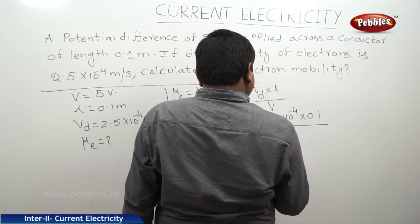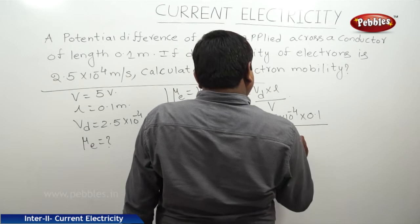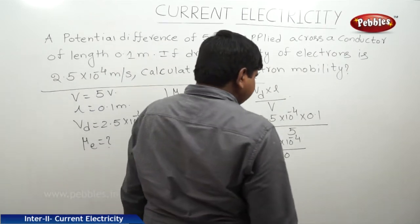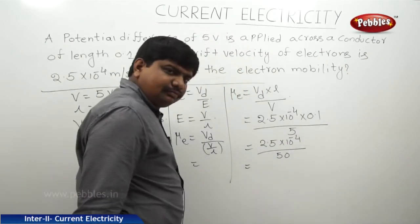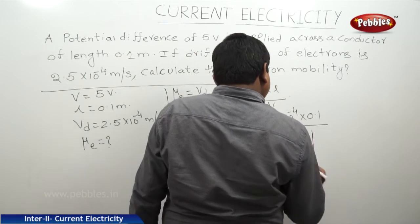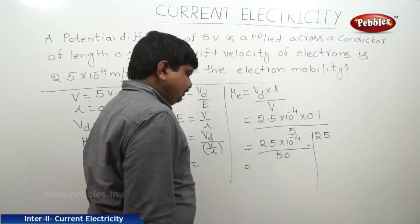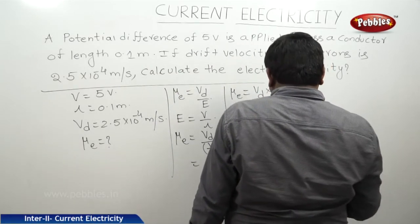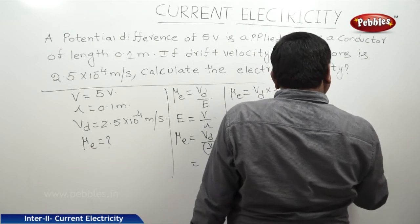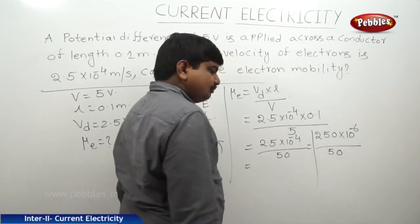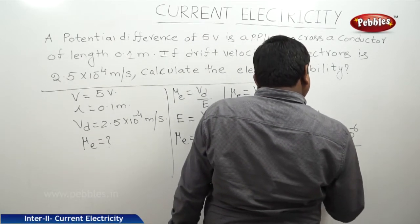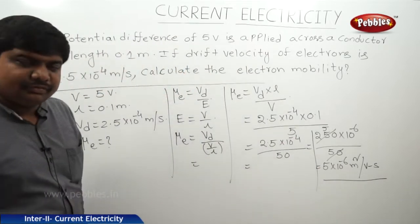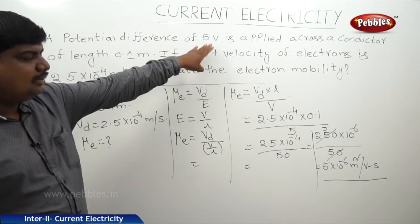So mu_e equals 2.5 into 10 to the power of minus 4 divided by 50. This can be written as 250 into 10 to the power of minus 6 divided by 50, which simplifies to 5 into 10 to the power of minus 6 meter square per volt second. This is the mobility of the electron through the conductor when this potential is applied.